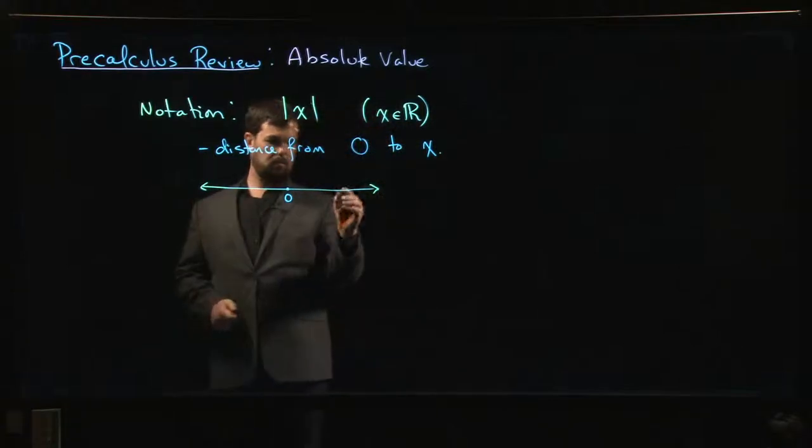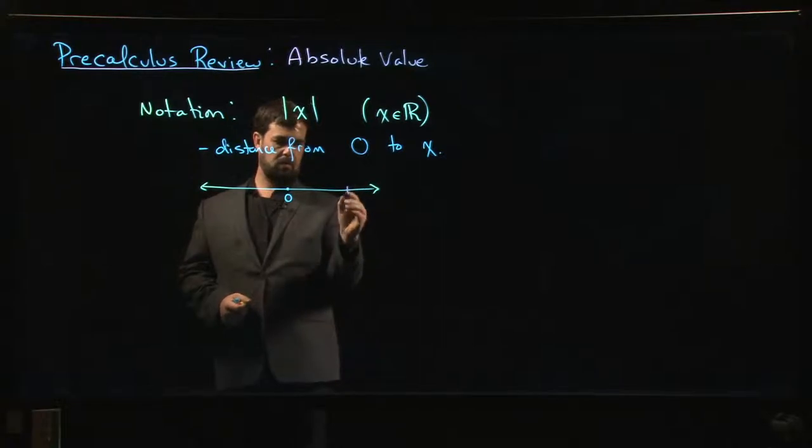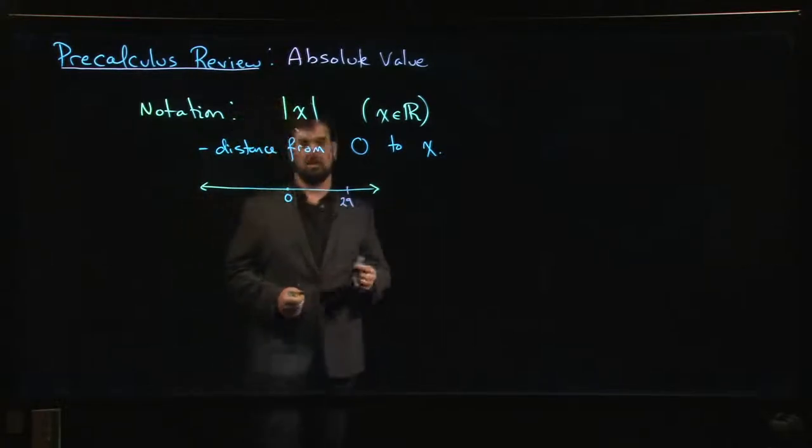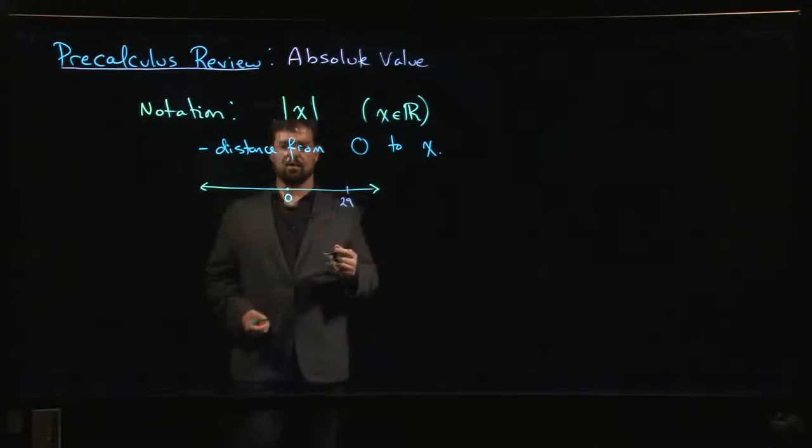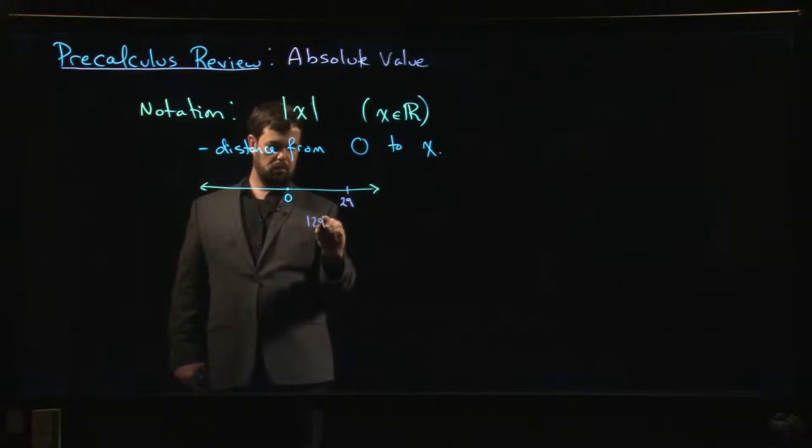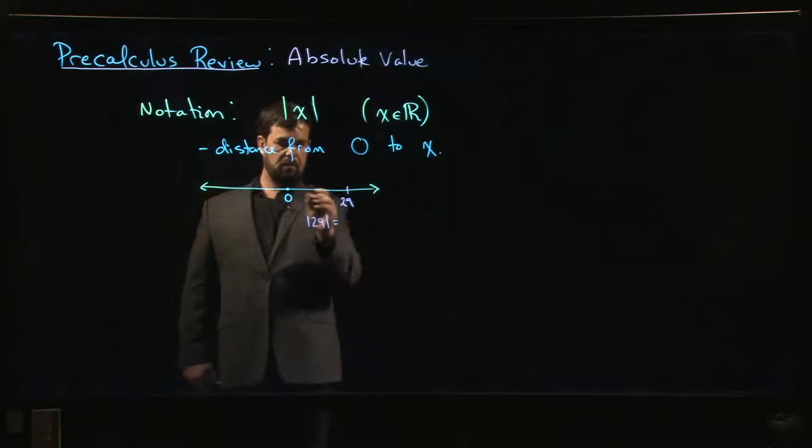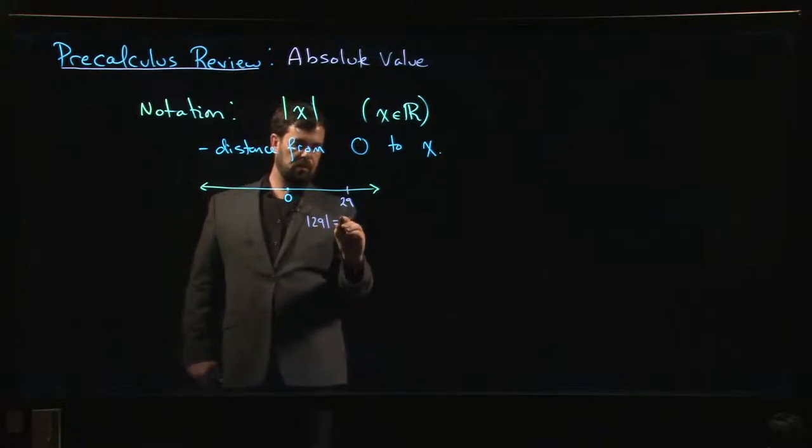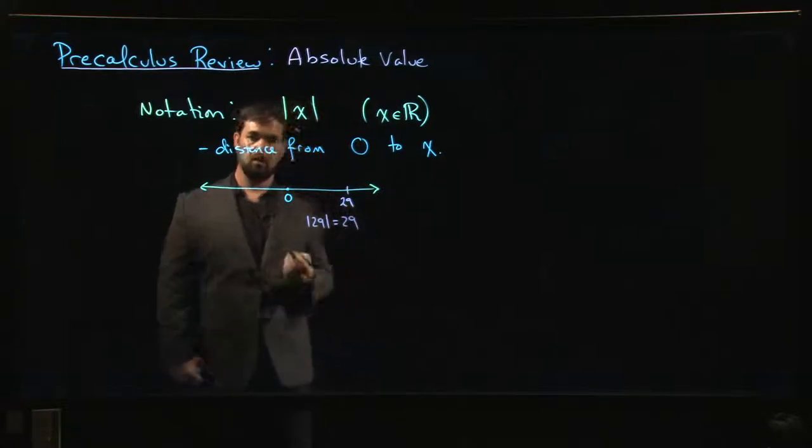So let's say I choose a number out here. Like, I don't know, 29. That's my number. So what's the distance from 0 to 29? Well, we measure distance using real numbers. The distance from 0 to 29 is simply 29.